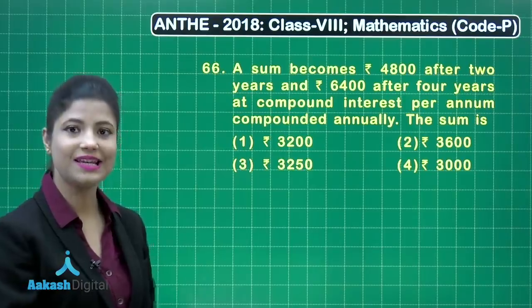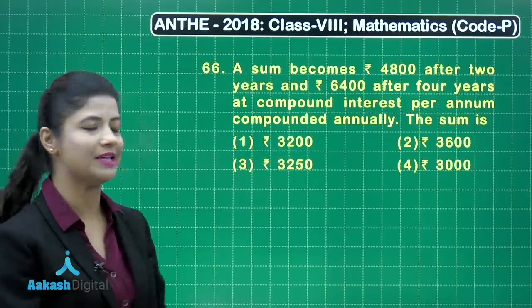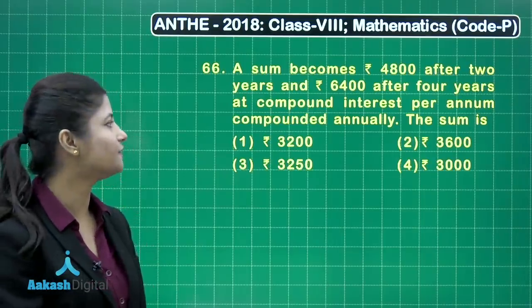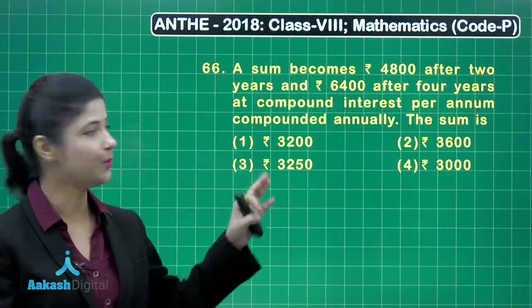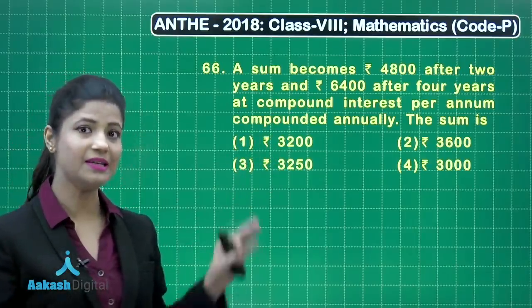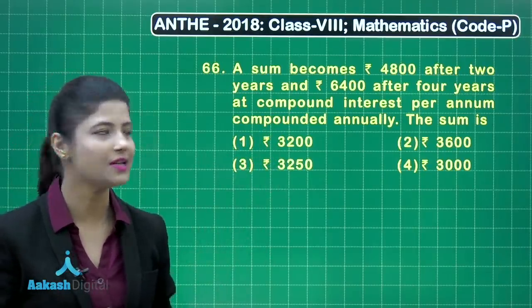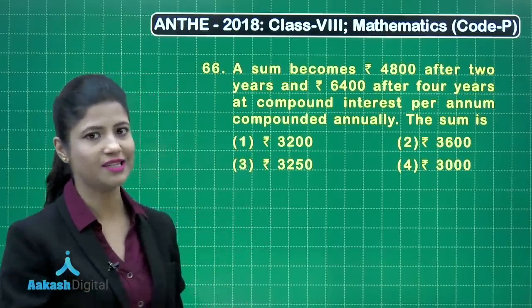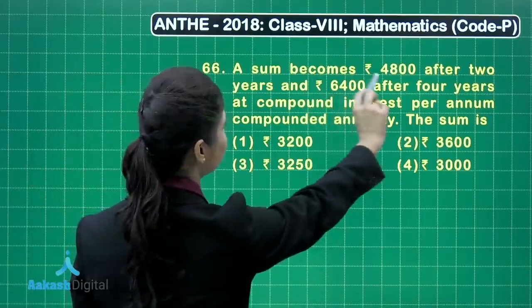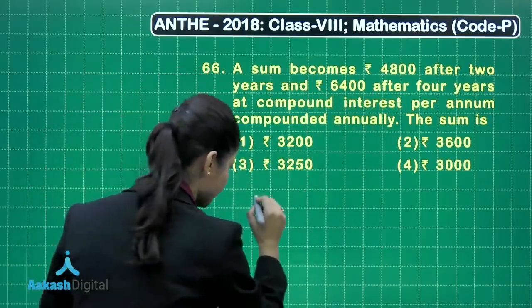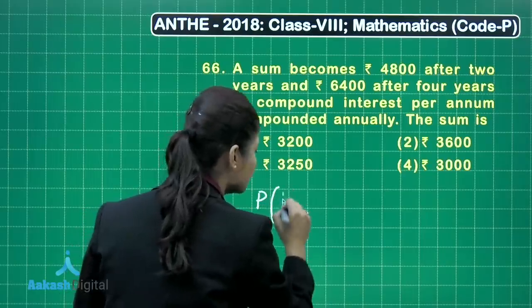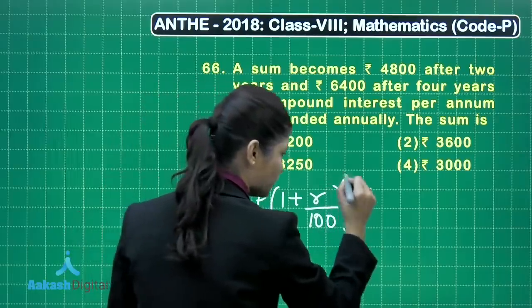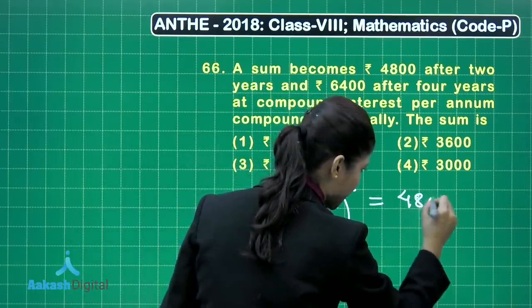Let us discuss question number 66. It states that a sum becomes rupees 4800 after 2 years and rupees 6400 after 4 years at compound interest per annum compounded annually. We need to find the sum. Let the principal be p and rate of interest be r. The amount after 2 years gives: p × (1 + r/100)² = 4800. Let this be equation 1.